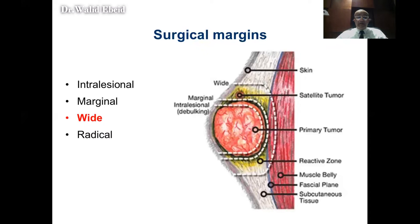Enneking divided the surgical margins into four types: intralesional, marginal, wide, and radical. Looking at the diagram, the tumor is in the middle surrounded by a pseudo-capsule in yellow, with normal tissues around it. If your resection goes through the tumor — as in curettage — this is called an intralesional margin, which is not suitable for malignant tumors but is suitable for benign tumors.